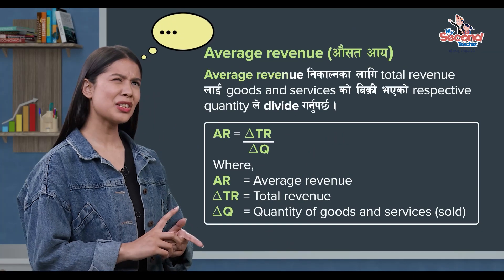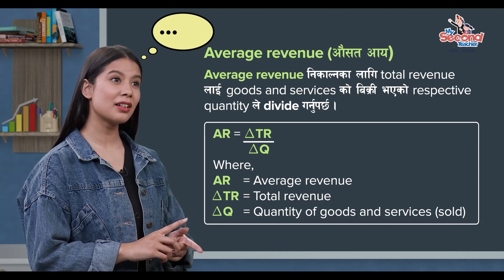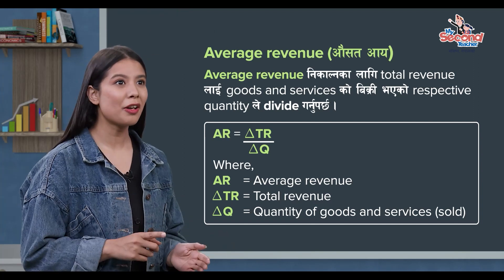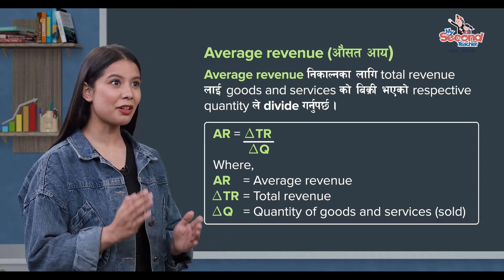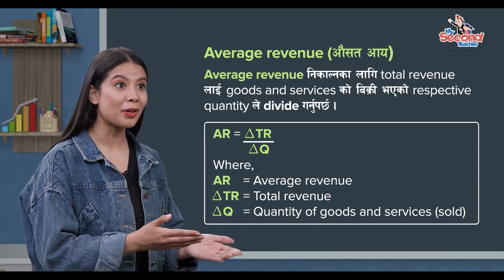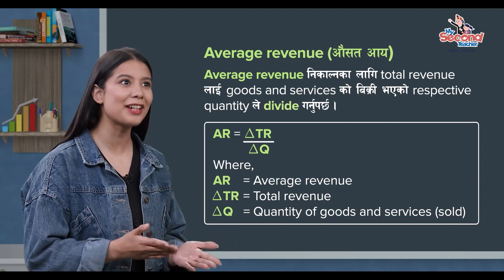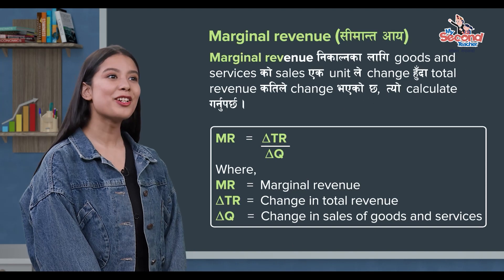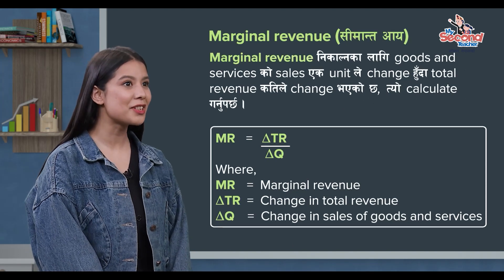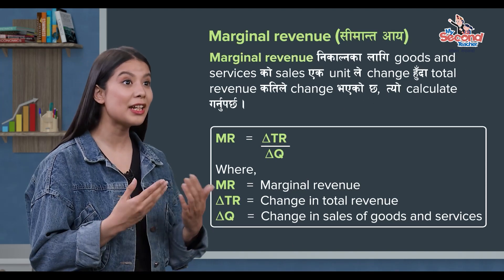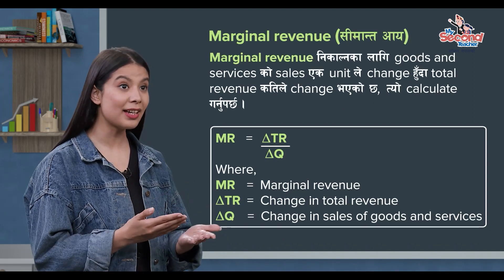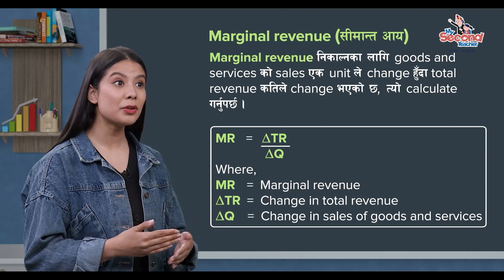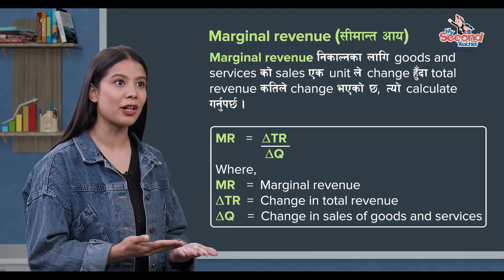Average revenue is total revenue divided by the respective quantity of goods and services sold. Marginal revenue is the change in total revenue when sales of goods and services change by one unit — total revenue is changed by one unit.